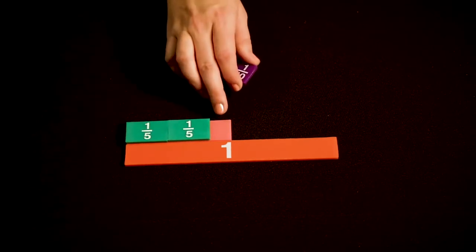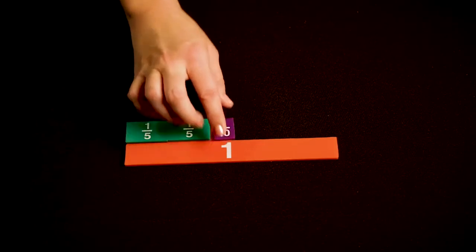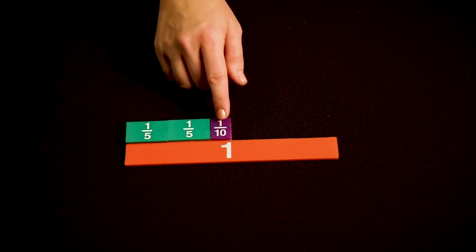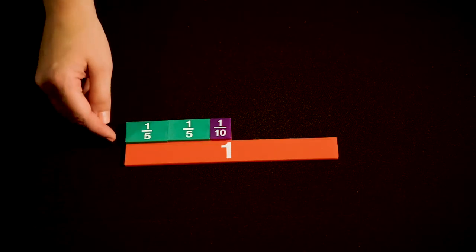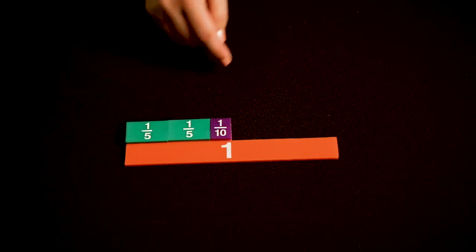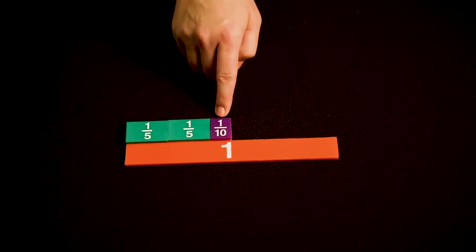I'm going to focus on this area of remaining, and I can see in the area that is remaining that one tenth is what remains. So when I have one half and we subtract two fifths, the answer is one tenth.